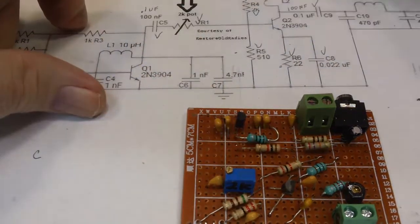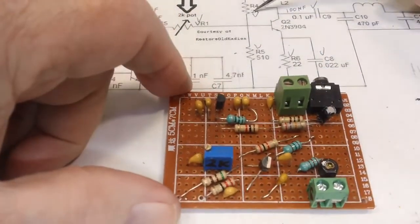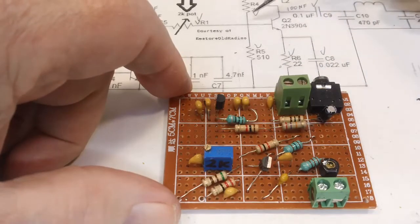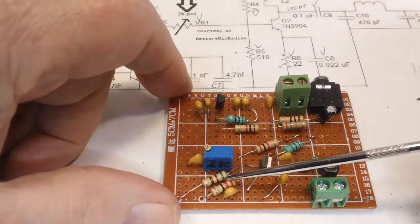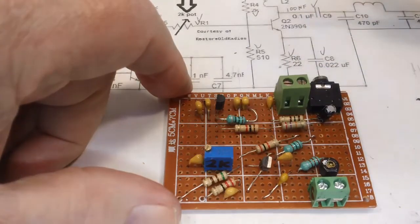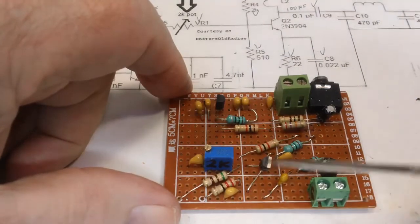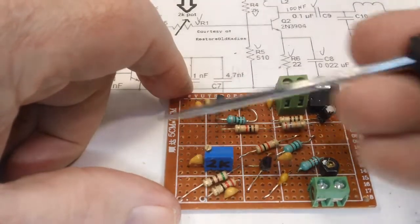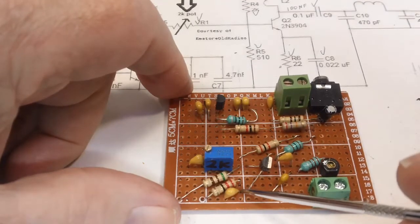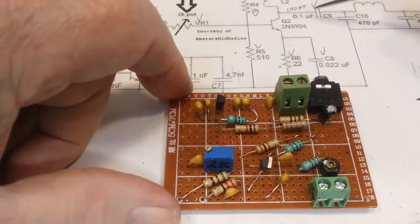Now, this C5 is 100 nanofarad, and I think I already mentioned it's 0.1, same thing. That's this one right here. It goes right into a VR, which is here, and from the VR side goes to here. We have a 2K on top, and you can see that's it right there, and a 510 on the bottom, and that's it right there. So they both connect to the base of the Q2, and that's that.